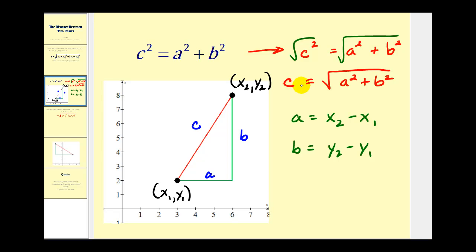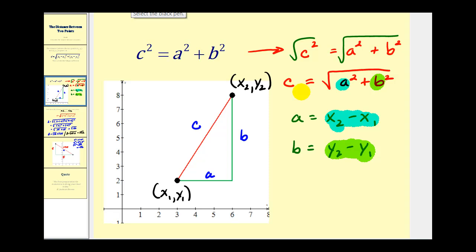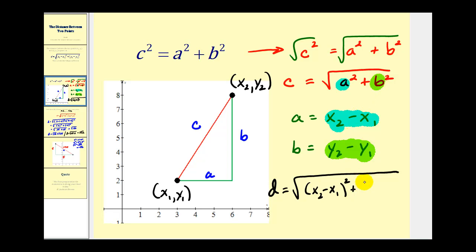So the only difference between the Pythagorean theorem solved for c and the distance formula is we're substituting x sub two minus x sub one for a, and substituting y sub two minus y sub one for b. If we perform these substitutions, instead of c we'll use d for distance, and we replace a with x two minus x one squared, plus we replace b with y two minus y one squared — and we have the exact distance formula as we saw on the previous screen.